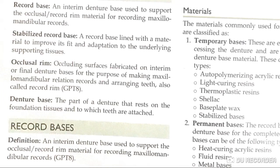What is the occlusal trim? It is an occluding surface. It is fabricated on interim rims or final denture bases. For this purpose, maxillomandibular relation records are used to arrange the teeth and rim records — we also call them rim records. And what is the denture base? It is the part of the denture which rests on the foundation tissues where the teeth are attached.